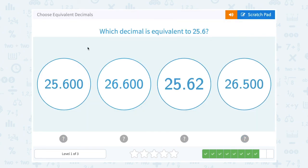Which decimal is equivalent to 25.6? Well that would have to be the first one, 25.600. Those extra zeros don't change our value.